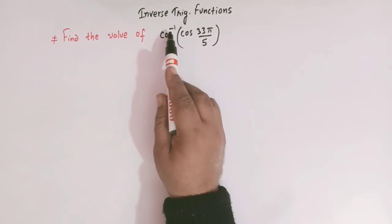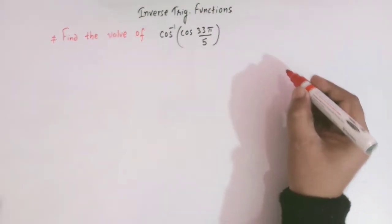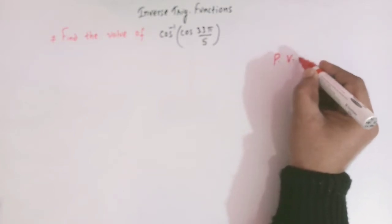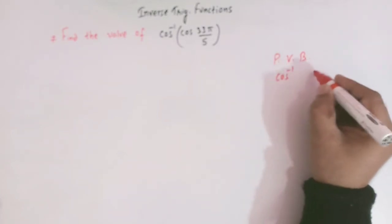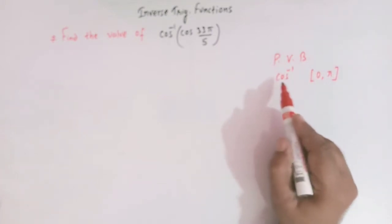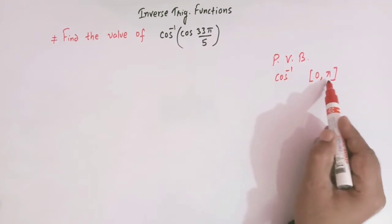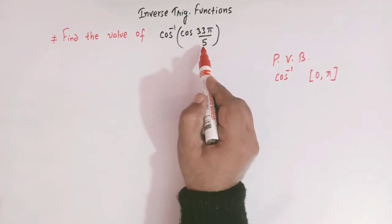From inverse trigonometric functions, we know that the principal value branch of the cosine inverse function is from 0 to π. So the values of cosine inverse function should lie between these two numbers.